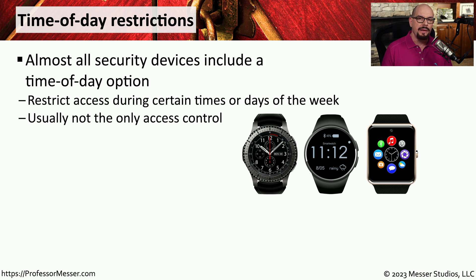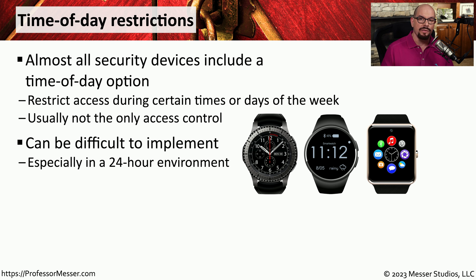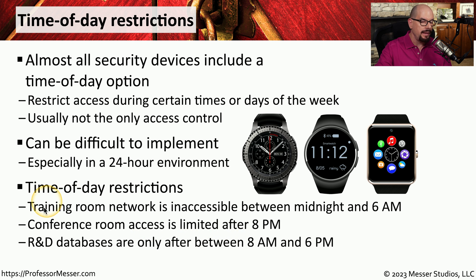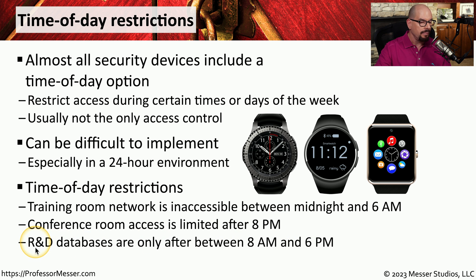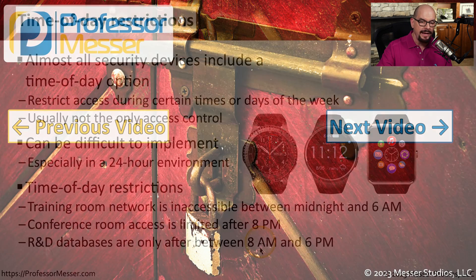One type of restriction that can be applied across many of these different control models is a time of day restriction. This means an administrator can allow or disallow access to a certain type of data or resource object based on what time of day it happens to be. This can become very complicated if you are a worldwide organization, so an administrator might include not just the time of day restriction but also what time zone is native for that particular user. For example, a training room network might be inaccessible between the hours of midnight and 6 AM, conference room access may be limited after 8 PM, and R&D databases might only be available between the hours of 8 AM and 6 PM.